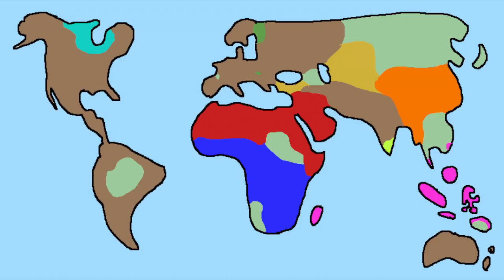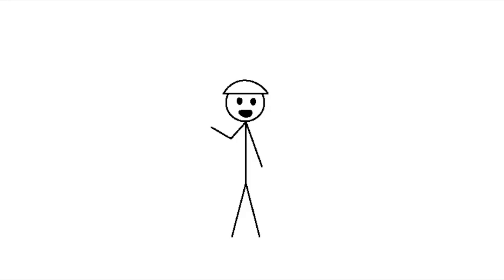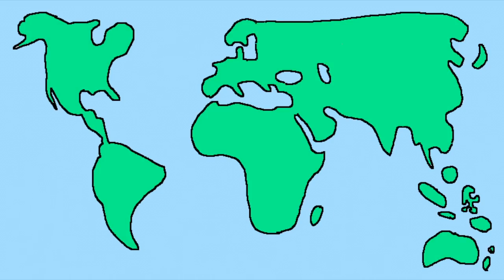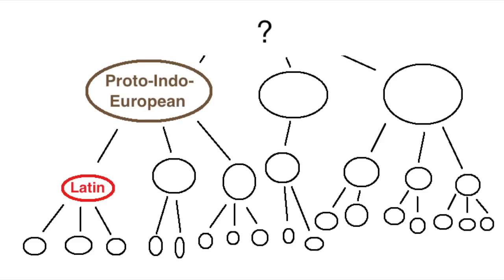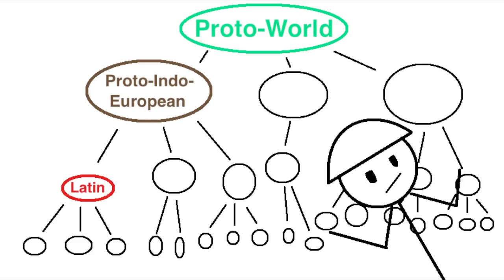But can we go bigger? Can we group languages into even bigger and bigger groups? Or here's the real question, could linguists prove that all the world's languages are related to each other? Before Latin, before Proto-Indo-European, was there ever a Proto-World? Well, maybe, but the normal comparative method isn't going to do us any good here.